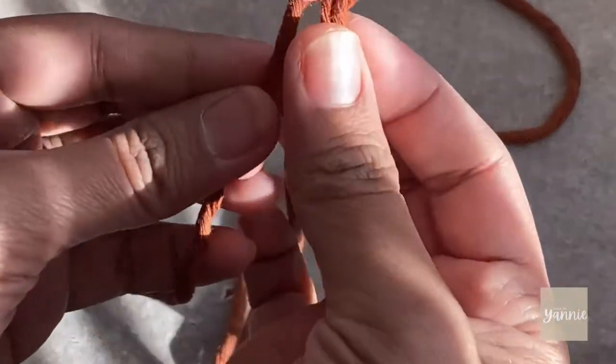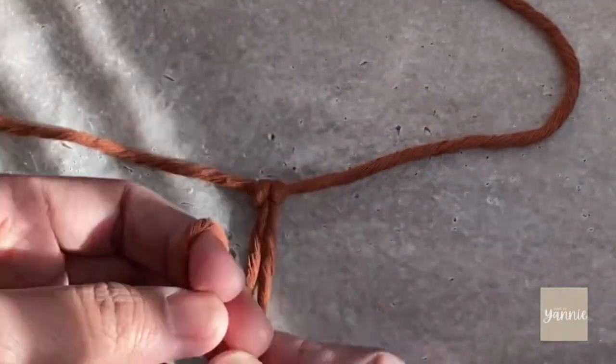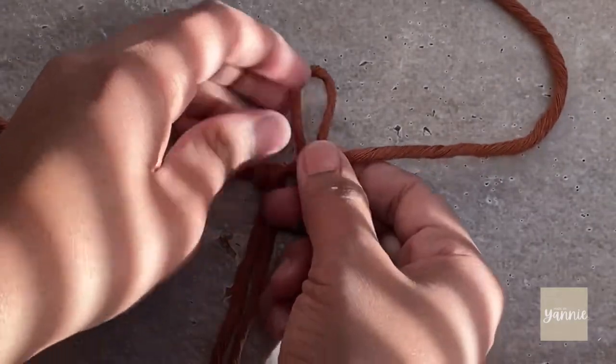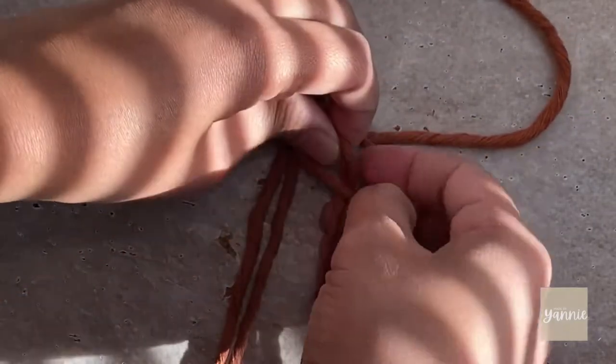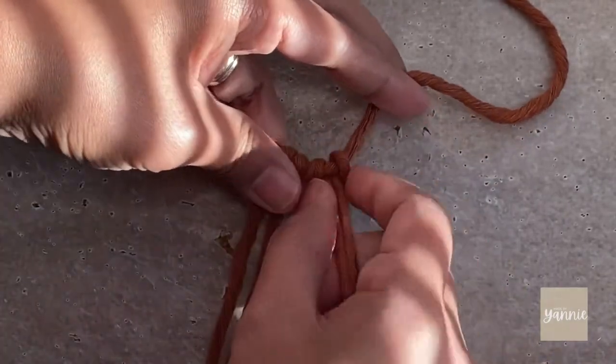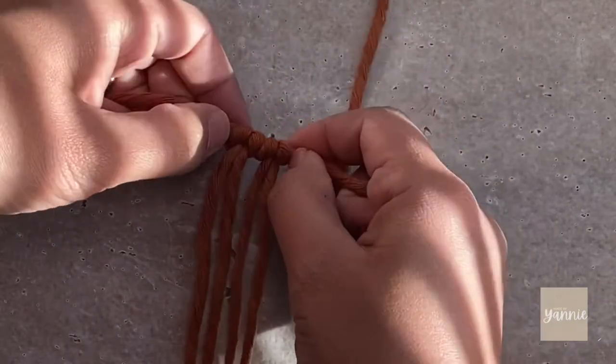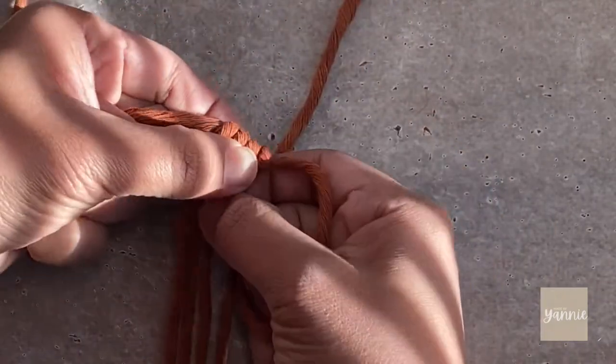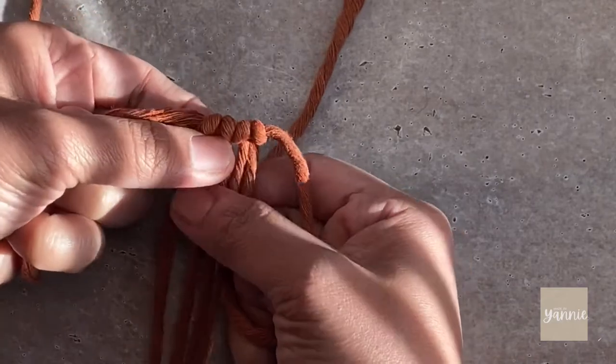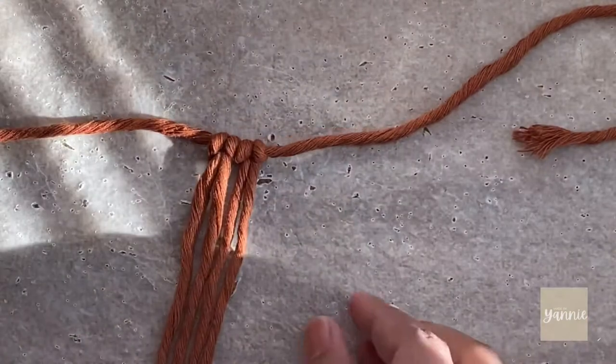This macrame polaroid hanger is really easy to make. It's a perfect stocking stuffer or a Christmas ornament and even a rearview mirror charm. I thought about making this for each one of my family members with a photo of my son because it's his first Christmas and also we are in the process of moving so it'll be a nice little remembrance.